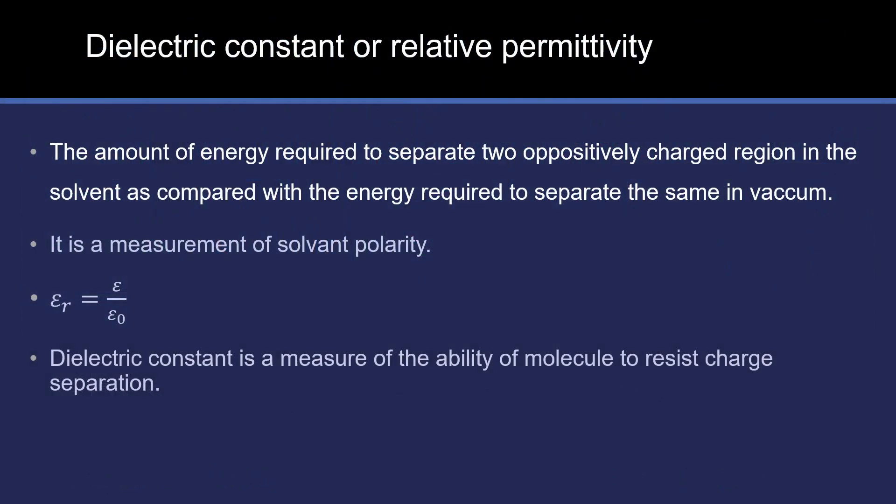The first property is dielectric constant, or relative permittivity. Dielectric constant is simplified. We have a solution with two opposite particles that are separate. The separate energy is notable.